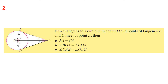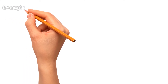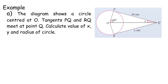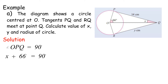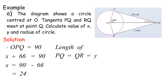Property 2: If two tangents to a circle with center O and points of tangency B and C meet at point A, then BC equals BA. Angle BOA equals Angle COA. Angle OAB equals Angle OAC. Example A: The diagram shows a circle centered at O. Tangents PQ and RQ meet at point Q. Calculate the value of X, Y, and the radius. Angle OPQ equals 90 degrees. X plus 66 degrees equals 90 degrees. X equals 90 minus 66 degrees, equals 24 degrees. Length PQ equals QR equals Y. Y equals 14 centimeters. Tan 24 degrees equals OP over 14. OP equals 14 times tan 24 degrees, equals 6.233 centimeters.